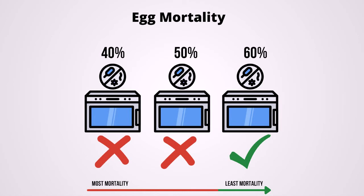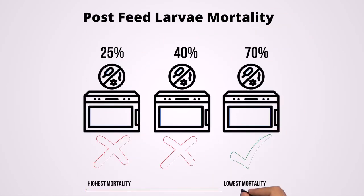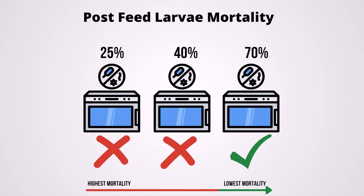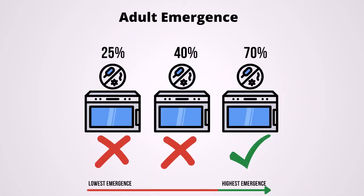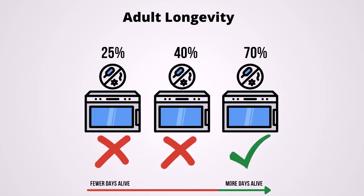Eggs subjected to 50% relative humidity also had a higher mortality rate and slower development than 60% relative humidity. Post-feeding larvae and pupae in 25% relative humidity had higher mortality than those in 40% and 70% relative humidity, while 40% relative humidity also had a higher mortality rate than 70% relative humidity. For adult emergence, pupae in 25% relative humidity had a lower successful adult emergence rate than those in 40% and 70% relative humidity, but pupae in 40% relative humidity also had a lower success rate than 70% relative humidity. Additionally, adults in 25% relative humidity survived fewer days than those in 70%, and adults in 40% relative humidity also survived fewer days than those in 70% relative humidity.